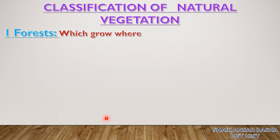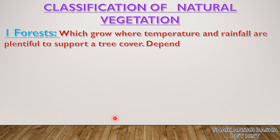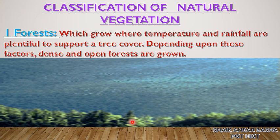Classification of natural vegetation. We can classify vegetation into three categories: number one, forest; number two, grasslands; number three, shrubs. Forests grow where temperature and rainfall are plentiful to support a tree cover. Depending on these factors, dense and open forests are grown. Forests may be thick or thin. In thick forests, human entry cannot be possible. In thin forests, human beings are approaching, accessing, and exploiting the forest cover.